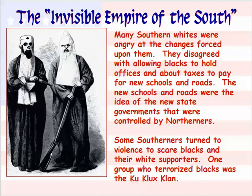Another issue facing African Americans after the Civil War was the invisible Empire of the South. Many Southern whites were angry at the changes forced upon them — they disagreed with allowing Blacks to hold office and were unhappy about taxes imposed by the new northern-backed governments. Some Southerners turned to violence to scare Blacks and their white supporters. One such group was the Ku Klux Klan, or KKK, which was set up by six former Confederate officers, using scare tactics to intimidate people into following their beliefs.